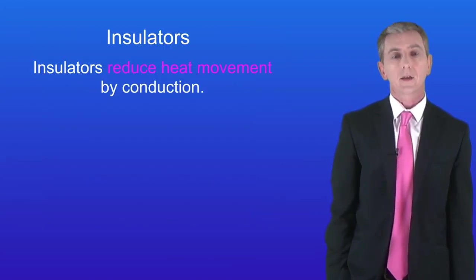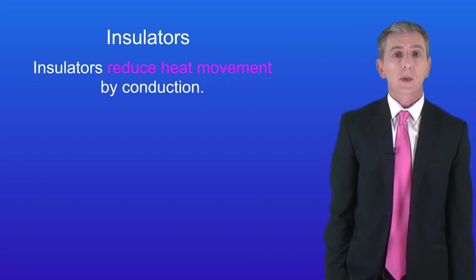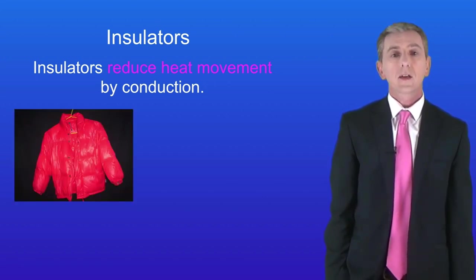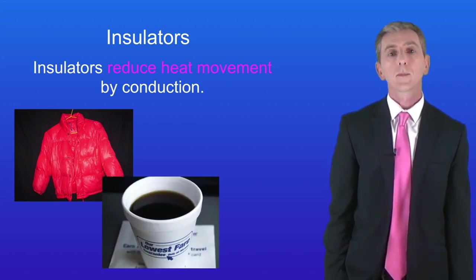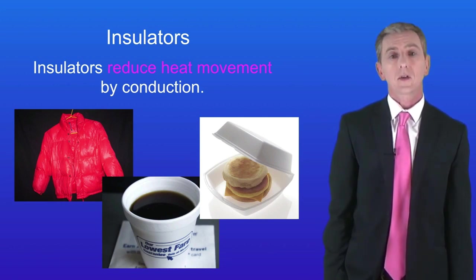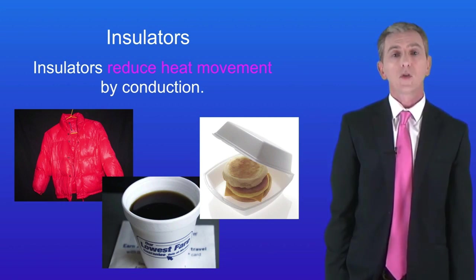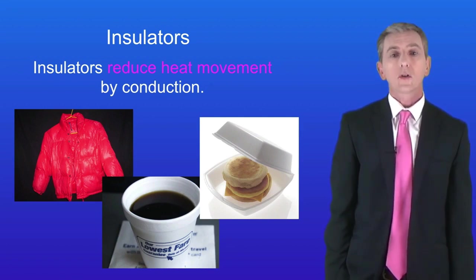Lastly we're going to take a look at insulators. Insulators reduce heat movement by conduction and here are some examples: an insulating jacket, a polystyrene cup for hot drinks and a polystyrene box to keep food hot. All of these are good insulators which means that they reduce heat movement by conduction. You need to be able to explain how insulators reduce heat movement and it's all to do with how the particles are arranged.